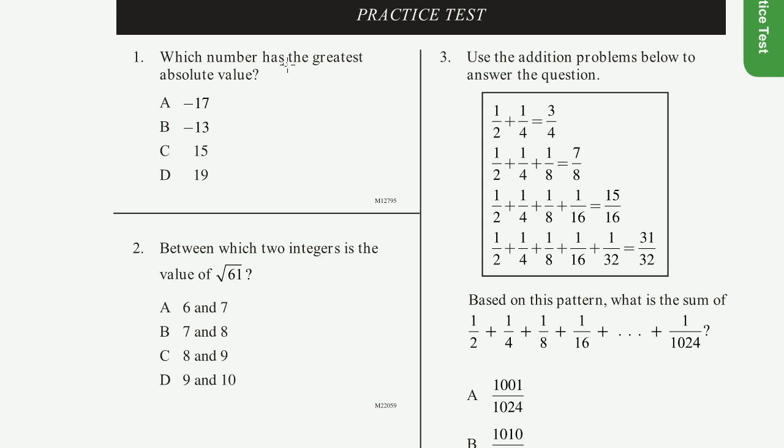Problem number one. Which number has the greatest absolute value? Absolute value is just the distance that the number is from 0, or how large the number is, regardless of its sign or its direction.